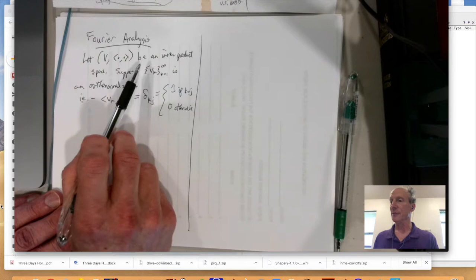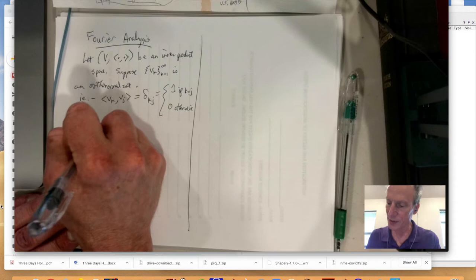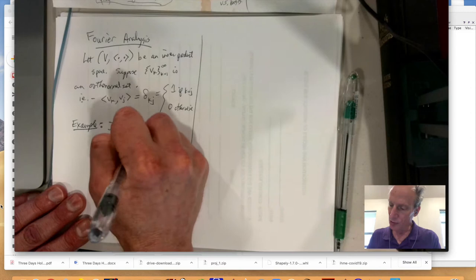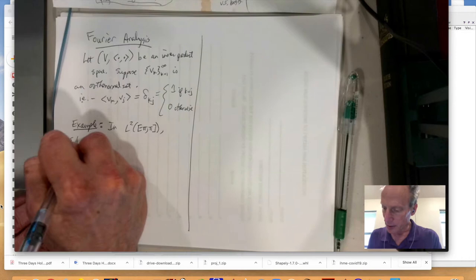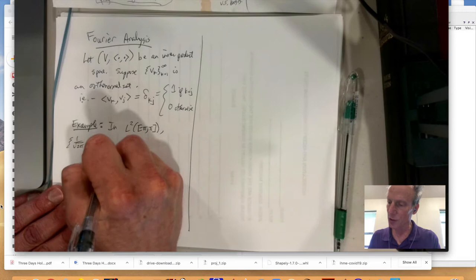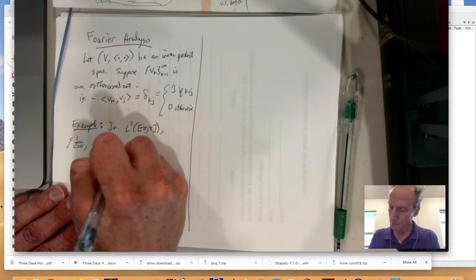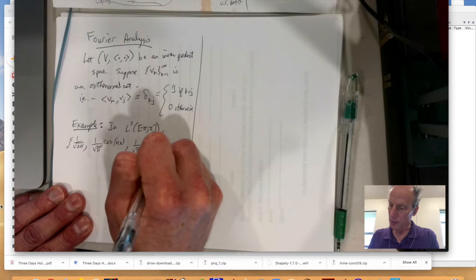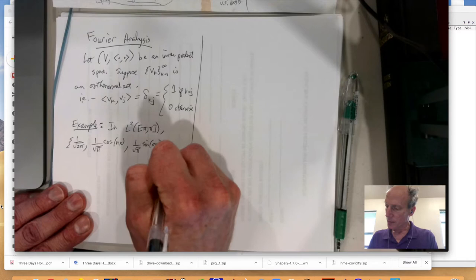And so you could think of the standard basic vectors in Rn as an example. But we'll typically be dealing with infinite differential cases. So for example, and this is one of the main results of this section, is that in L2 of the interval negative pi to pi, this set is orthonormal.